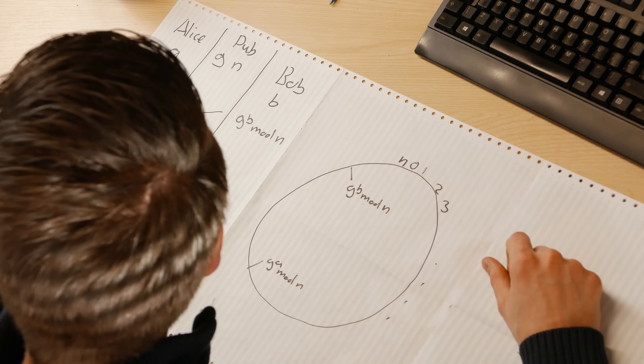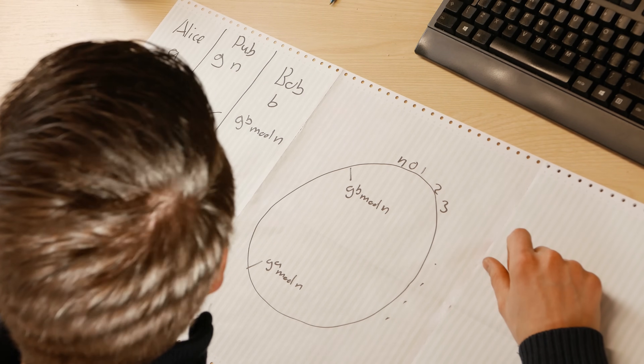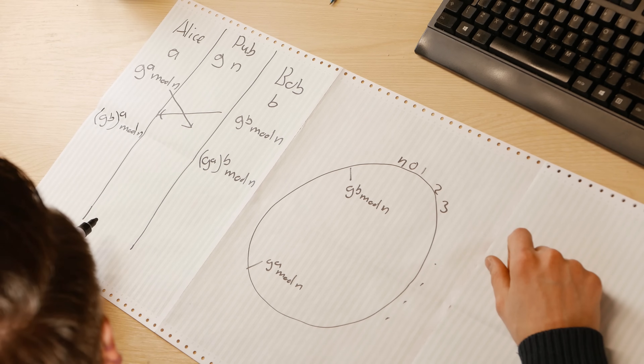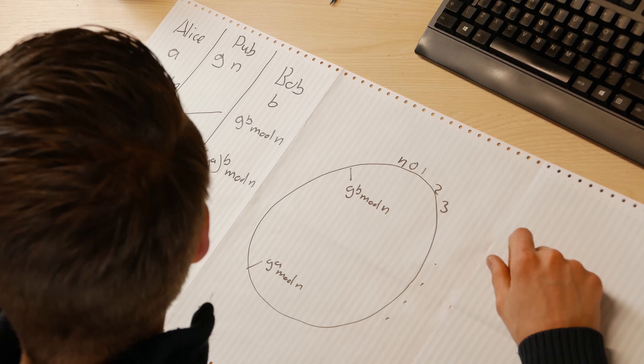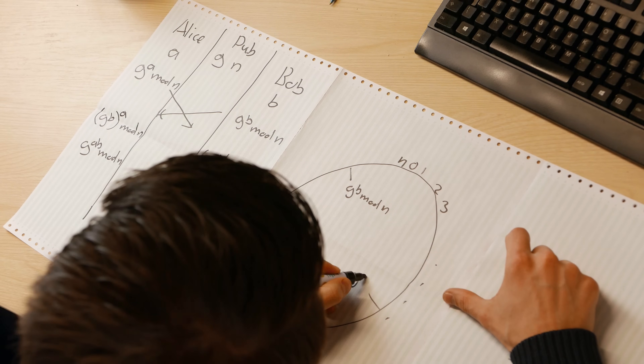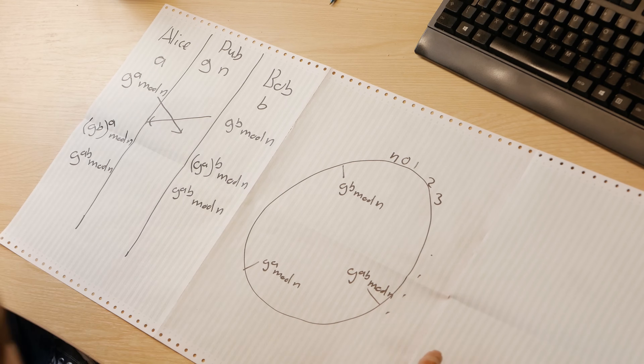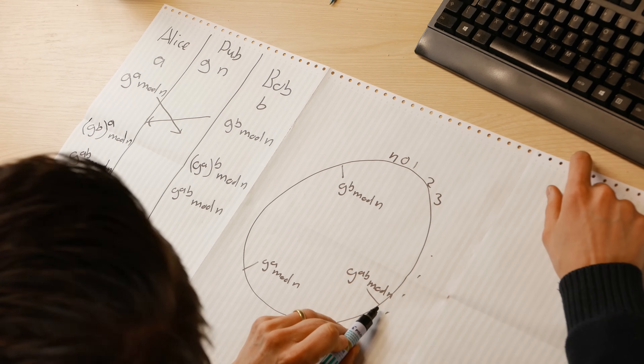Alice takes G to the B that Bob sent and raises it again to the power of A mod N. Bob takes G to the A that Alice sent and raises it to the power of B mod N. Anyone who's done exponentiation knows that if you raise something to a power and then to another power, it's just those two exponents multiplied. So both arrive at G to the AB mod N — exactly the same value. These are two identical colors from our color analogy. They've both arrived at the exact same position in this group, despite neither of them knowing each other's private key. That's what's really cool about Diffie-Hellman.